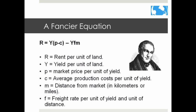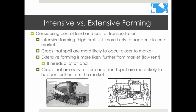Summing up what we've learned so far, the model predicts that intensive farming and farming of crops that spoil are going to occur closer to market. It also predicts that extensive farming and crops that are easy to store will occur further from the market.